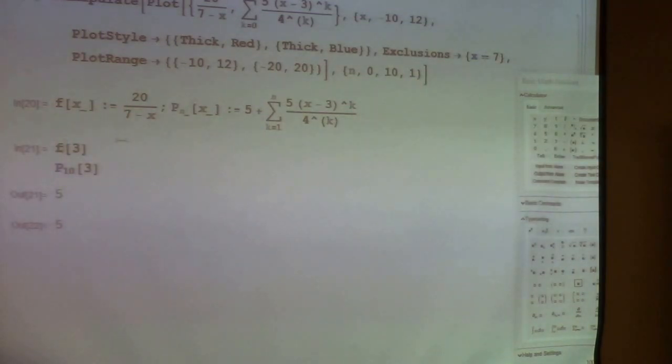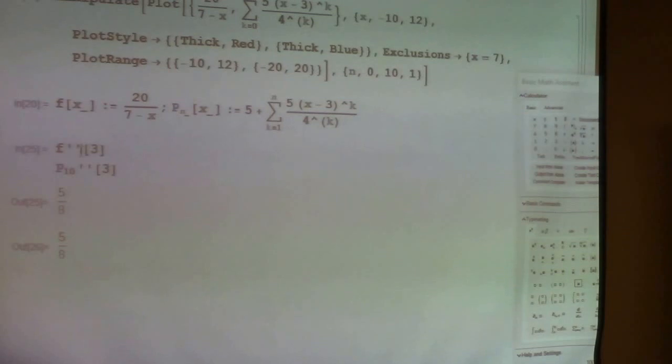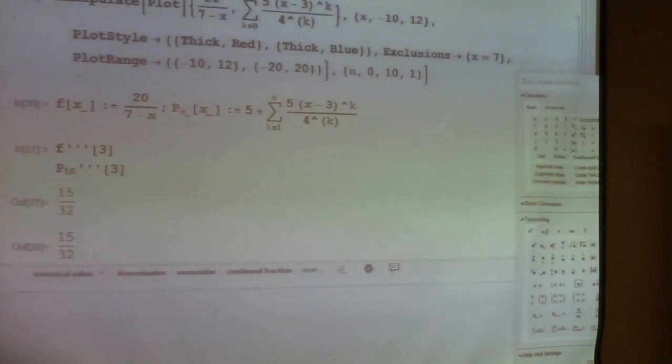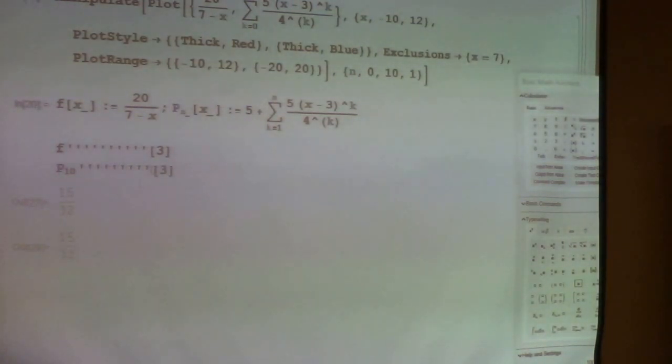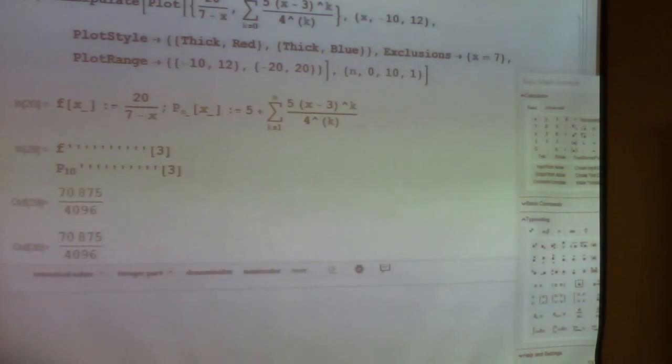What about their derivatives at 3? They're both 5 over 4. What about their second derivatives at 3? They're both 5 eighths. What about their third derivatives at 3? They're the same thing still. What about their tenth derivatives at 3? 1, 2, 3, 4, 5, 6, 7. The same.